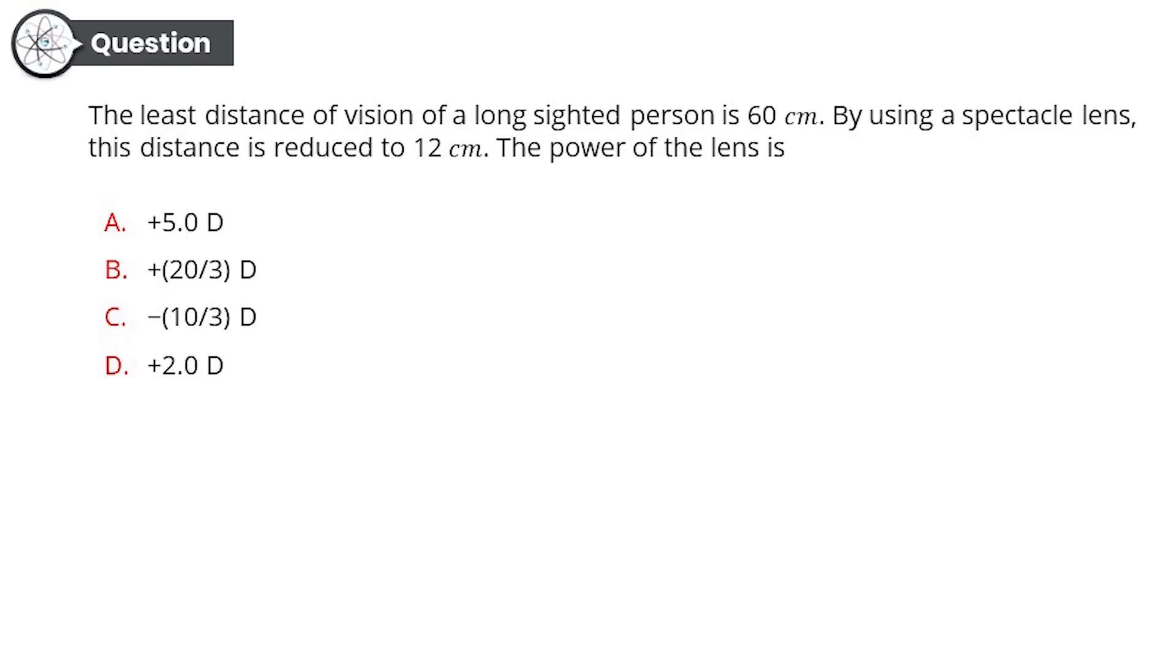Option A: +5 diopters. Option B: +20/3 diopters. Option C: -10/3 diopters. Option D: +2 diopters. What do you guys think? Now my dear students, this is a simple 10th standard question. I hope you're getting it right. The correct answer is option B: +20/3 diopters. Very well done, super proud.